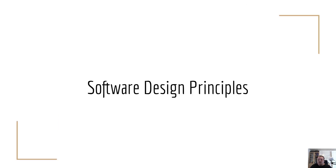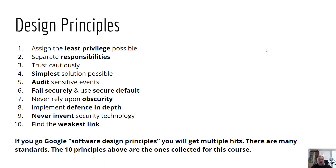So let's look at the software design principles now. This first page gives an overview of the 10 different design principles we're going to look at. If you go to Google and search for software design principles, you will find a lot of different hits — top 5, top 3, top 10, top 20. To start somewhere, I chose these 10, which are also the ones I use in my classes.